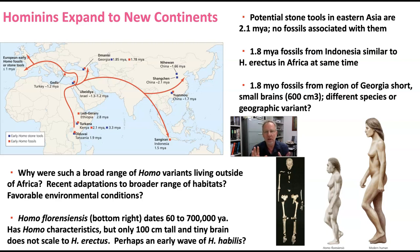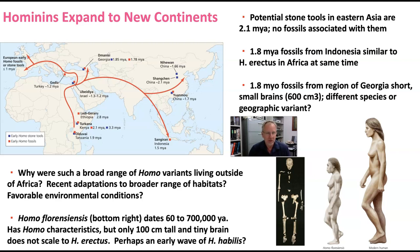However, there are no hominin fossils associated with these apparent stone tools, so some archaeologists aren't convinced that they're tools — they want to find fossils in the same place at the same time. About 1.8 million years ago, we see fossils in the area of Indonesia that are very similar to Homo erectus fossils that we see in Africa at the same time.